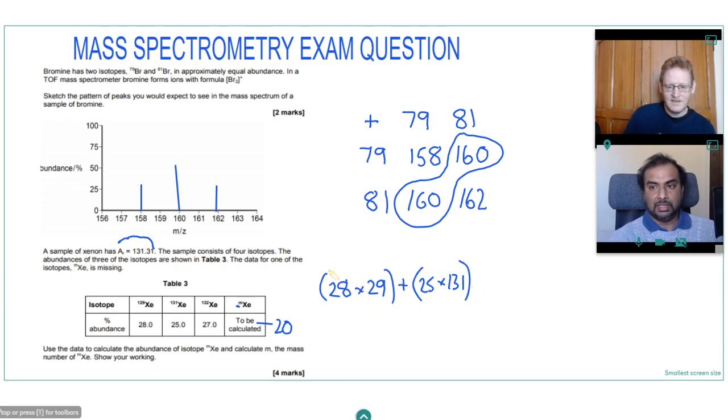And we'd also get 25 that would weigh 131. So 129 there. You missed the 1 there, 29. Okay, thanks for pointing that out. And 27 that weigh 132.